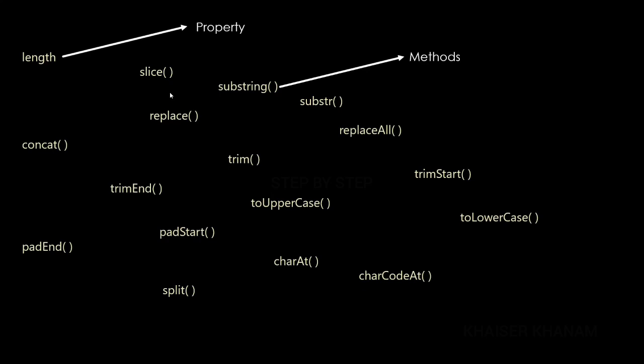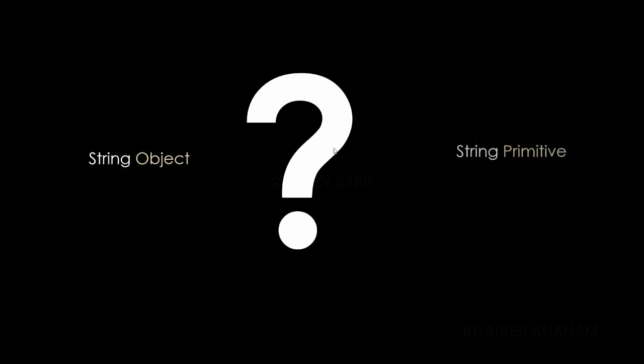There is only one property — `length` — and all the others are methods: `slice`, `substring`, `replace`, `replaceAll`, and many more, which we are going to see one by one. Many of us may have a question: if a string primitive is automatically converted to a string object, why not just use a string object? The answer is: we should always use string primitive.